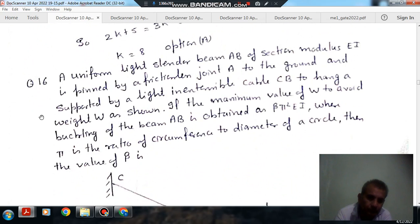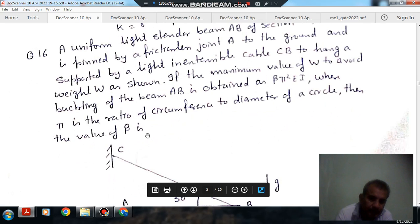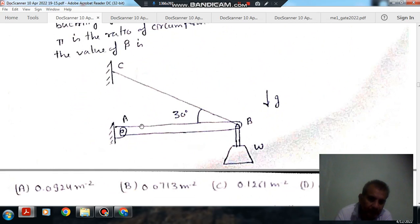Next, a uniform light slender beam AB of section modulus EI is pinned by a frictionless joint A to the ground and supported by a light inextensible cable CB to hang a weight W as shown. If the maximum value of W to avoid buckling of the beam AB is obtained as beta pi square EI, where pi is the ratio of circumference to diameter of the circle, then the value of beta is.